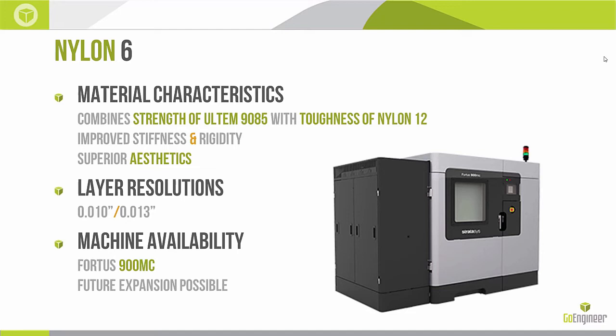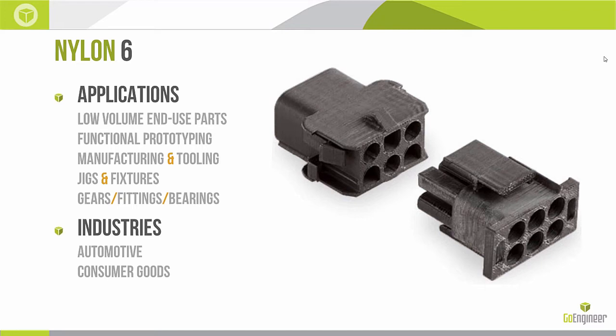The applications for Nylon 6 include low-volume end-use parts — this was probably one of the first materials we could really use in a production environment, which is partly why it was put on the Fortus 900. We can create parts that are used and sold in their 3D printed form. It's also good for functional prototyping, particularly if you're using a Nylon 6, Nylon 6-6, or Nylon 6-10 material in your end-use part. Manufacturing and tooling, jigs and fixtures, and also low-volume end-use components like gears, fittings, and bearings are all great fits.